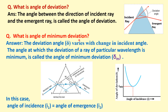What is the angle of minimum deviation? The deviation angle delta varies with the change in incident angle. The angle at which the deviation of a ray of particular wavelength is minimum is known as the angle of minimum deviation. The incident ray is in one direction and the emergent ray is here; this angle delta M is the minimum angle of deviation. In this condition the incident angle I1 should be equal to the angle of emergence I2.